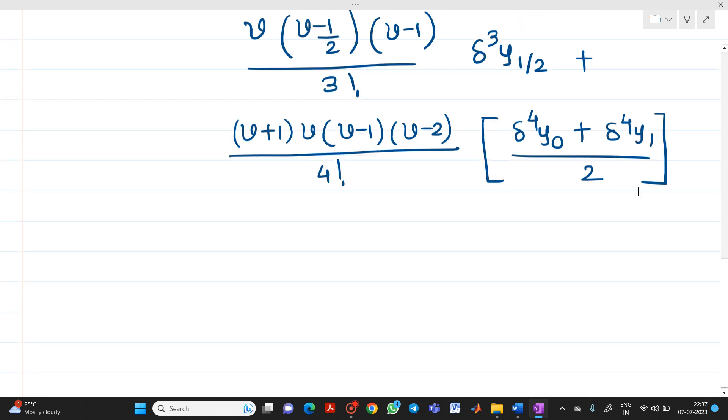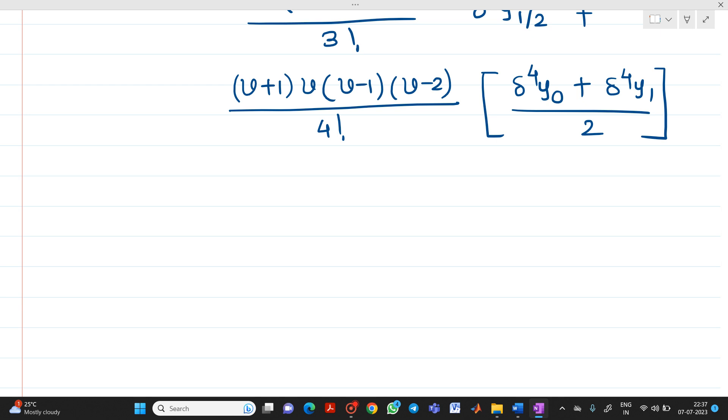Now, what is the value of v here? Here v is nothing but x minus x0 divided by h where this h is the step size. x is the value which is to be interpolated.